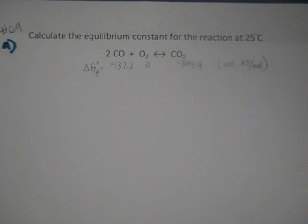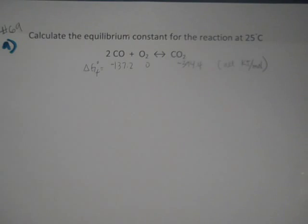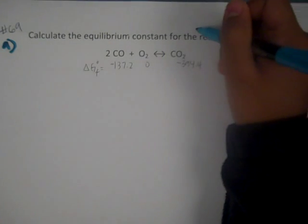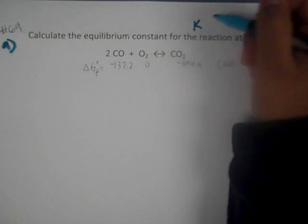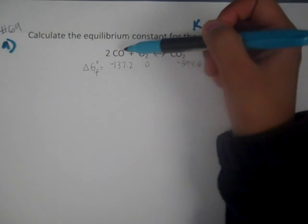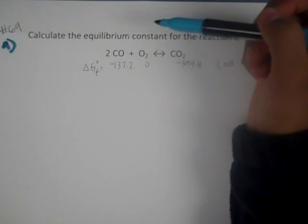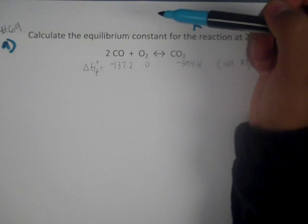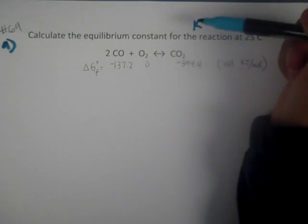The other problem for chapter 17 is going to be 69A. We're trying to find the equilibrium constant, which we know is a K value — a big K, like our usual K. The formula given is carbon monoxide gas plus O2 gas going to CO2 gas.